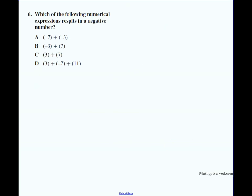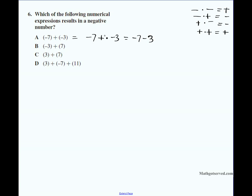Let's take a look at question number six: which of the following expressions results in a negative number? Starting with option A: negative seven plus negative three. A plus times a negative gives a minus, so since the signs are different it becomes minus seven minus three. When adding numbers with the same sign, you add and keep the sign — so this becomes negative ten. That's a negative number, so the answer to number six is option A.